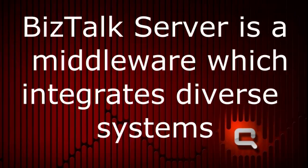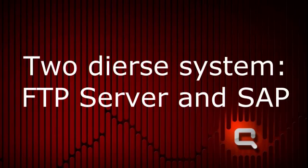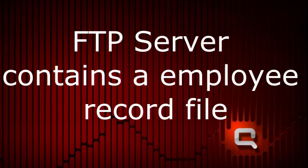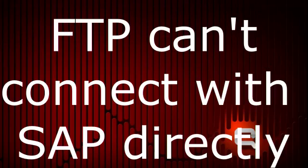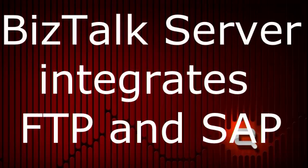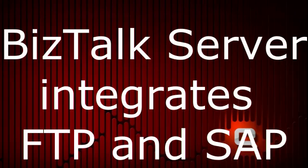BizTalk Server integrates diverse systems. Let's take a simple example: we have two diverse systems — one is an FTP server and the second is SAP. There is a file on the FTP server which contains the employee record, and we want to submit that file into SAP. The FTP server cannot directly connect with SAP, so here we need a tool which can integrate these two systems. This is where BizTalk comes in — we put BizTalk in the middle of the FTP server and SAP, and we make communication with the help of BizTalk Server.